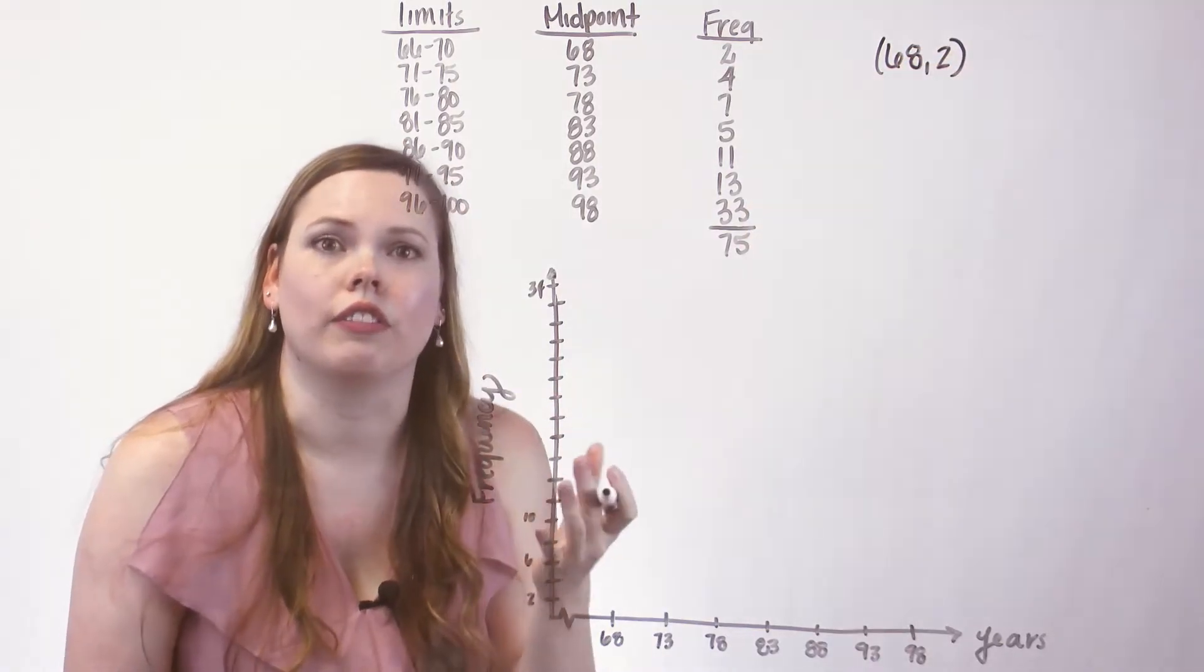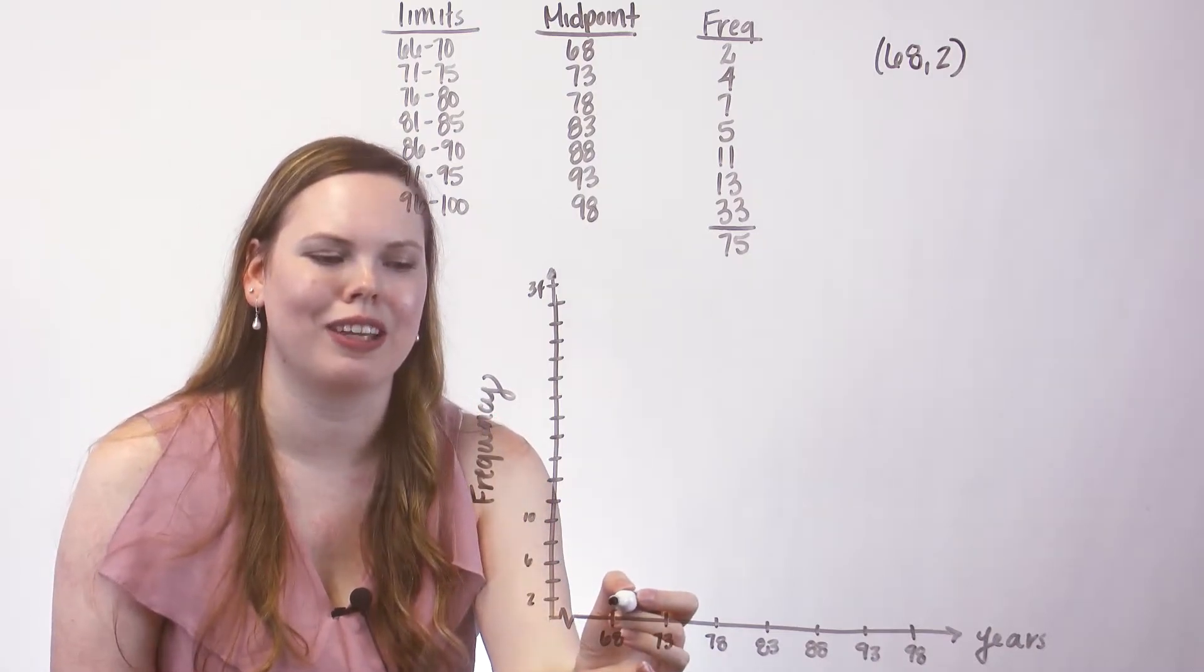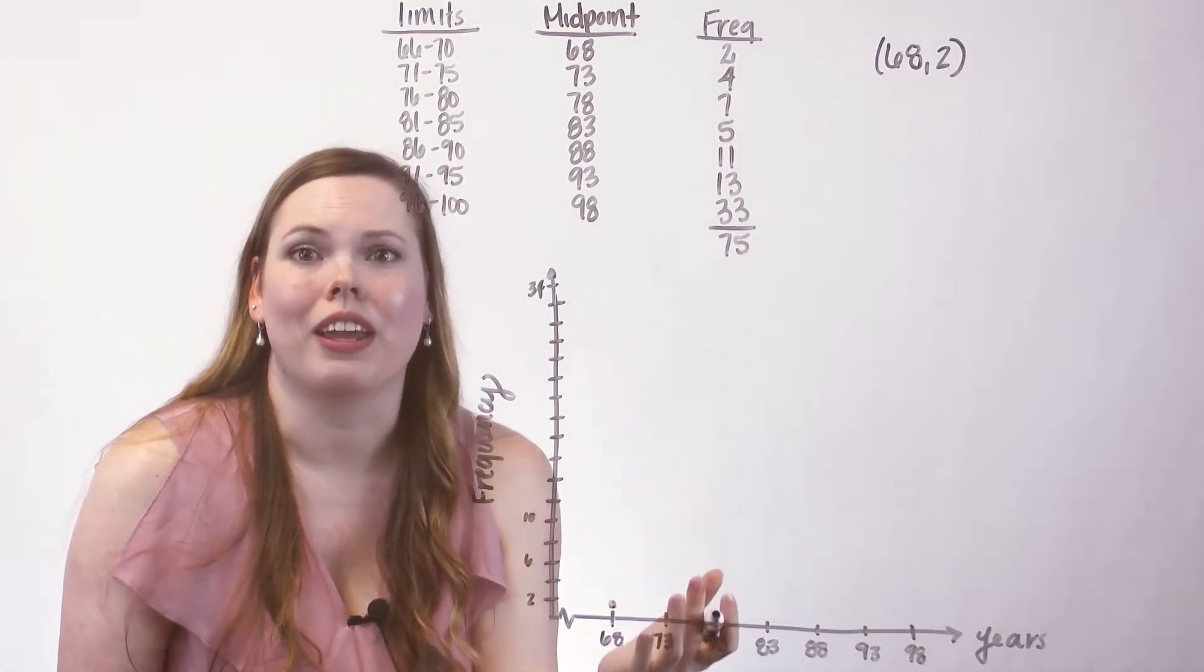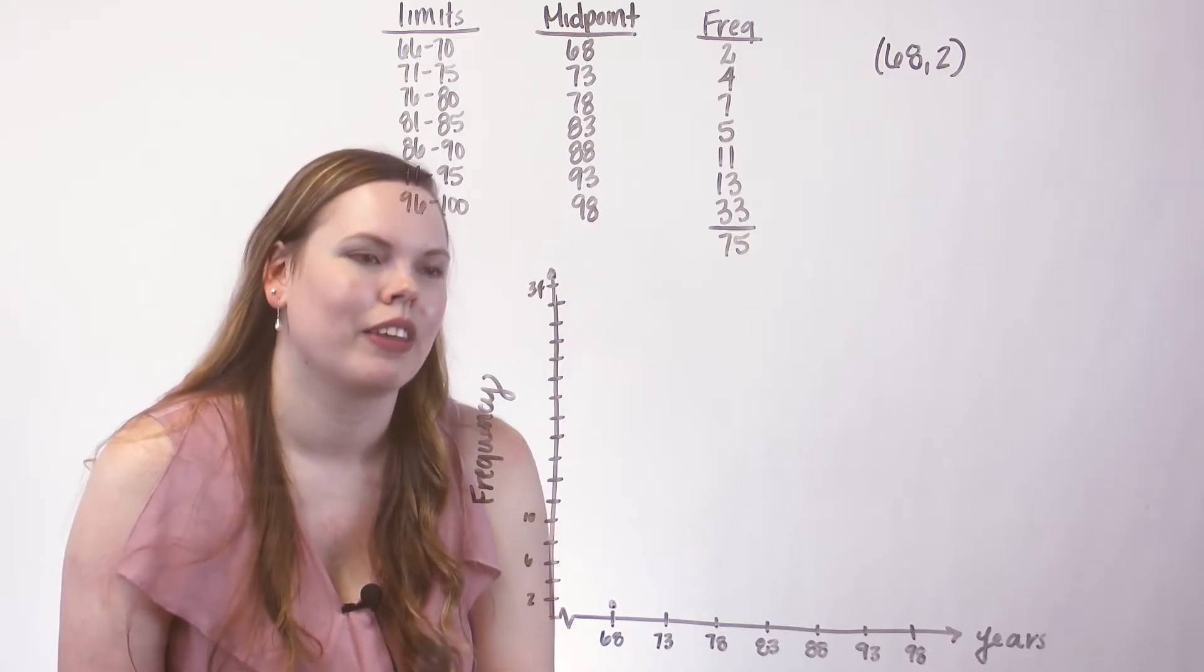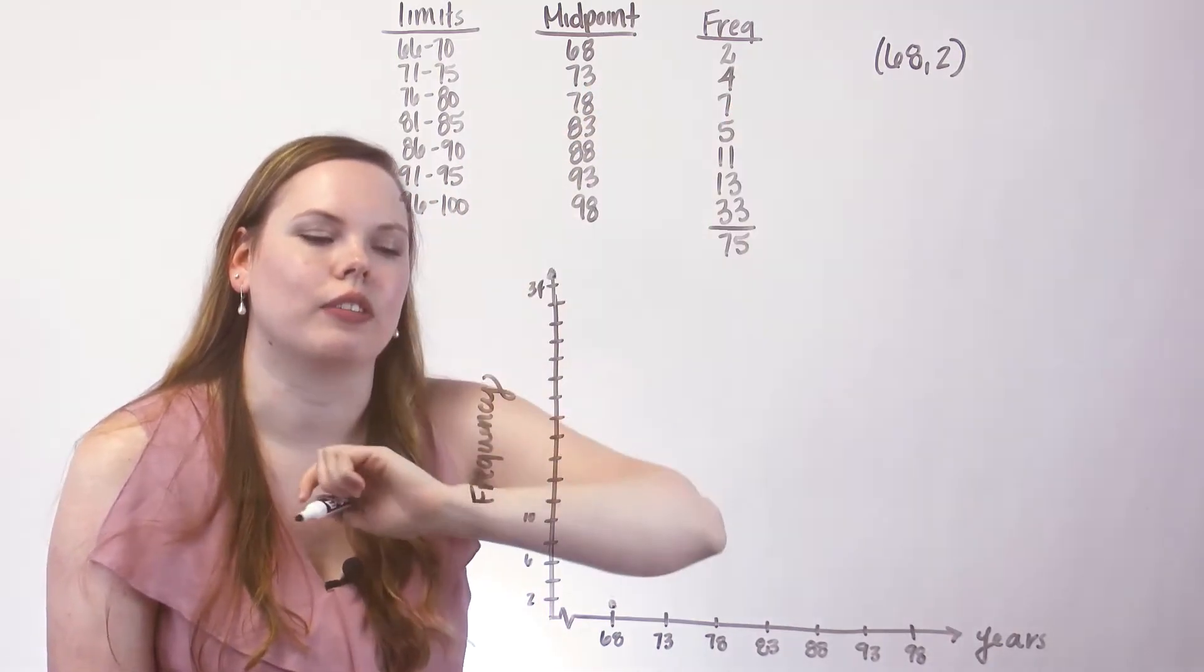So you can almost think of this as 68, 2, as our first point on this frequency polygon. So 68, 2, kind of like plotting a coordinate plane. And that's what this is. And then our second point would be the midpoint 73 and the frequency 4.